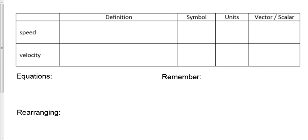We've defined four terms now, giving you the symbols for those terms, giving you the units and identified them as vectors or scalars. We've got position, we've got displacement, we've got distance, and we've got time. We just wrote a little practice quiz on that, and for the most part we did pretty good.